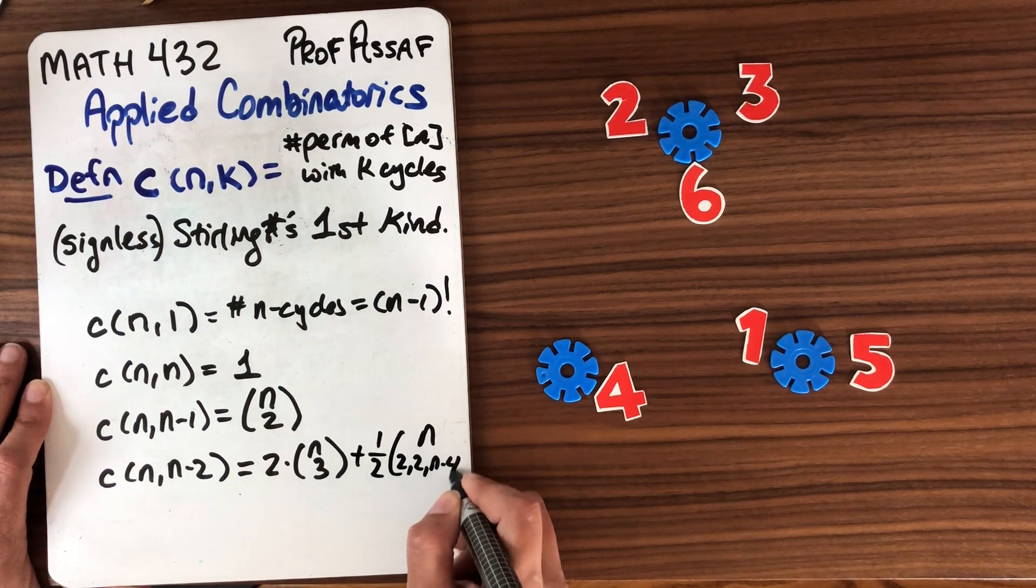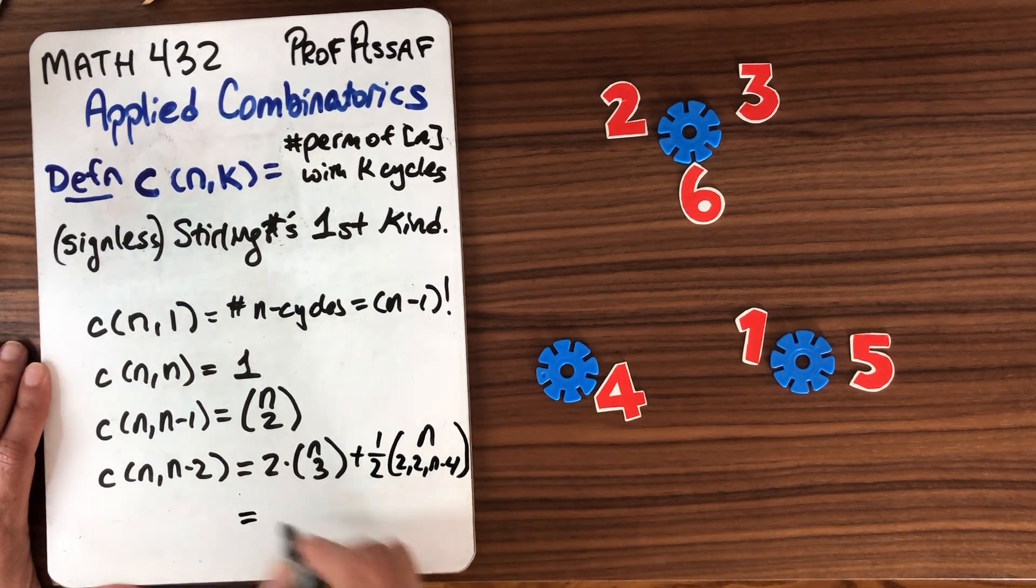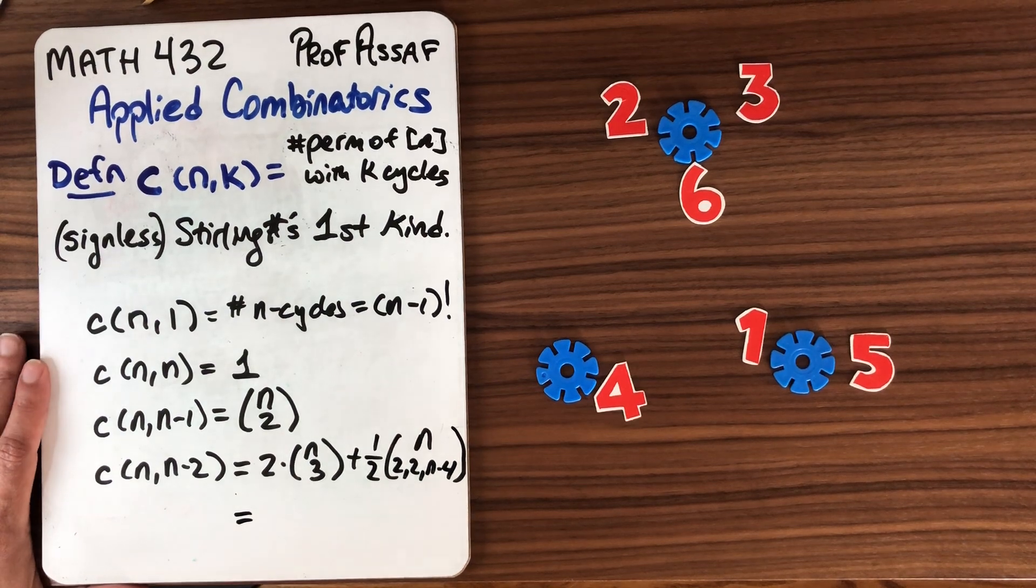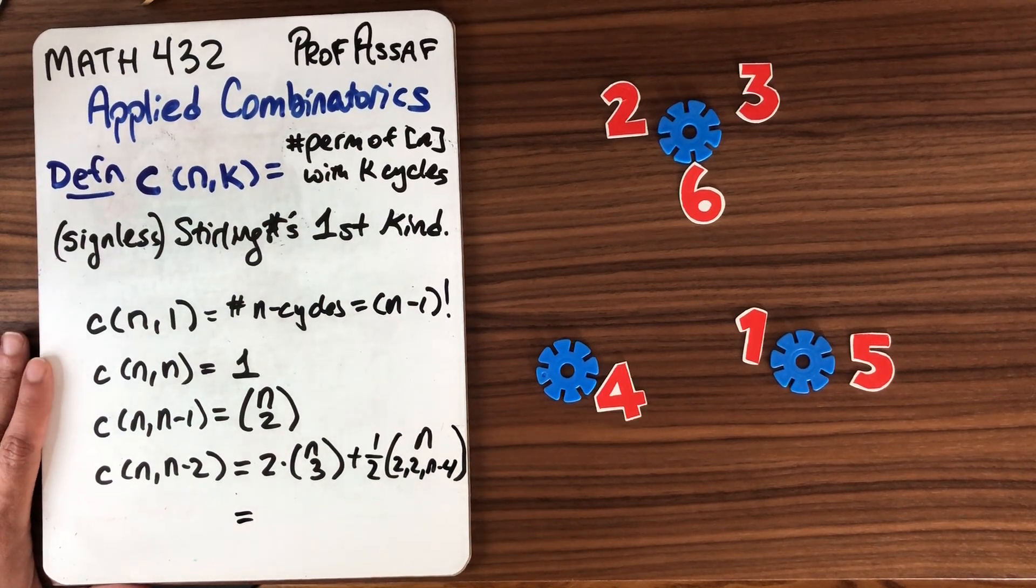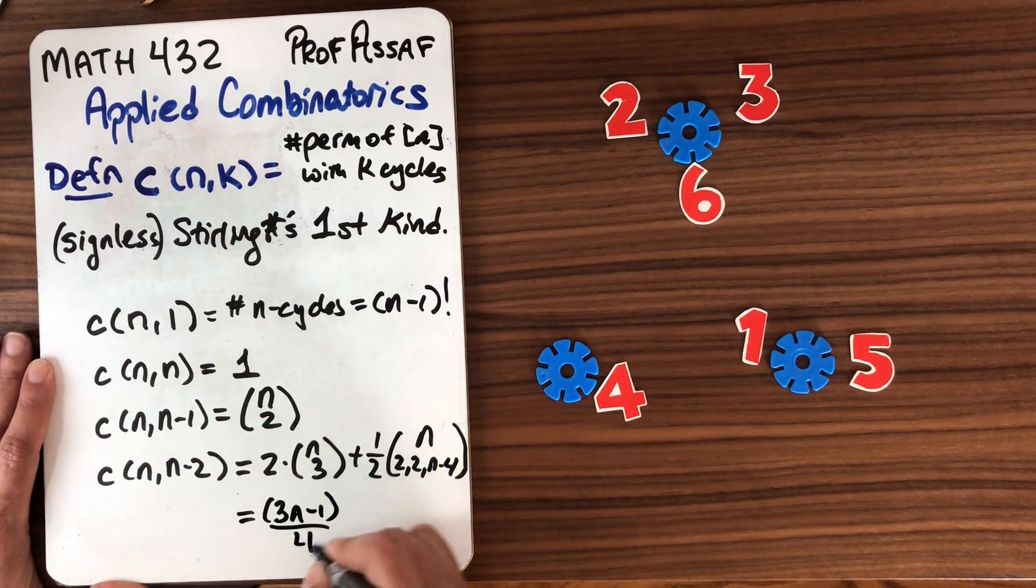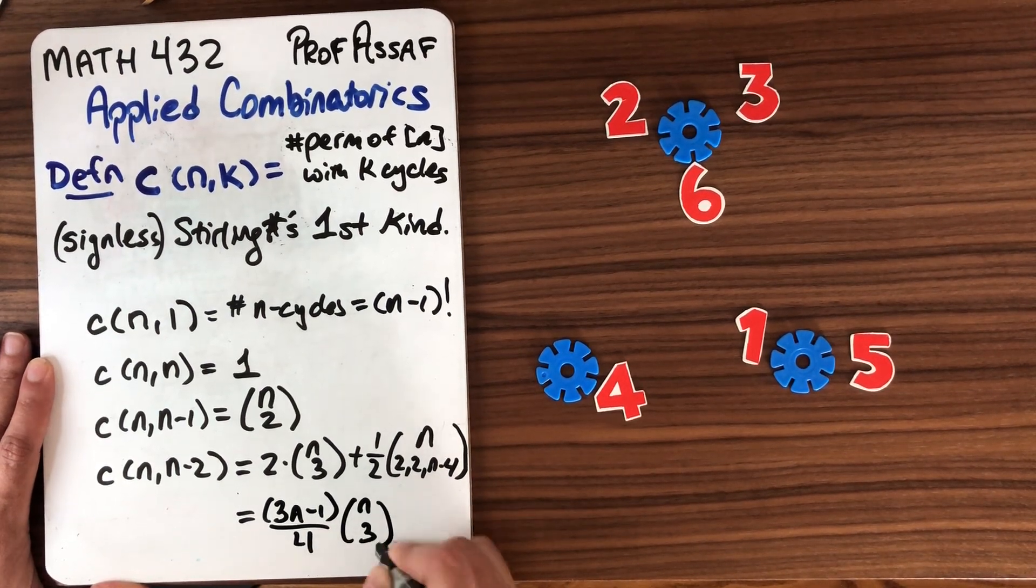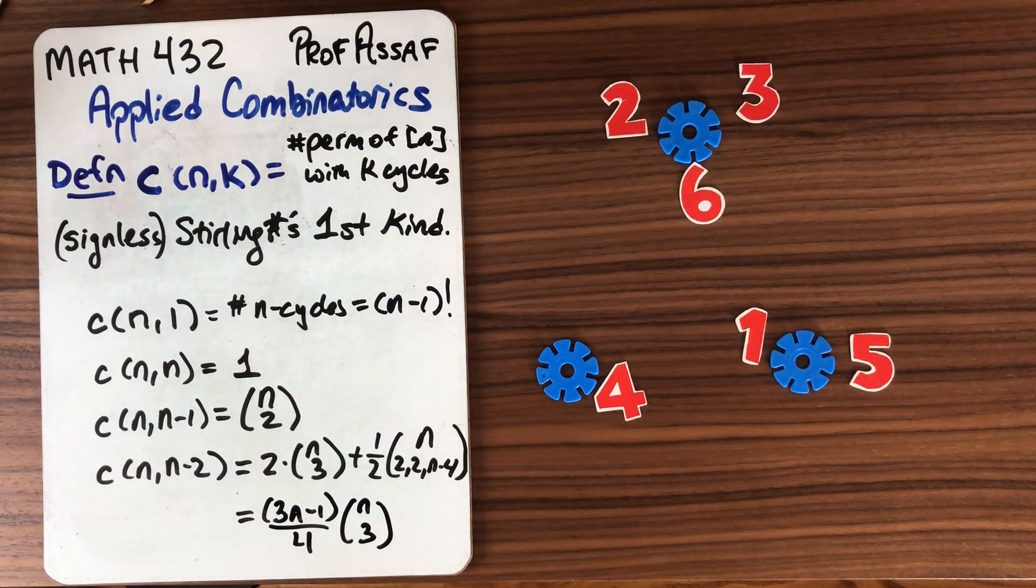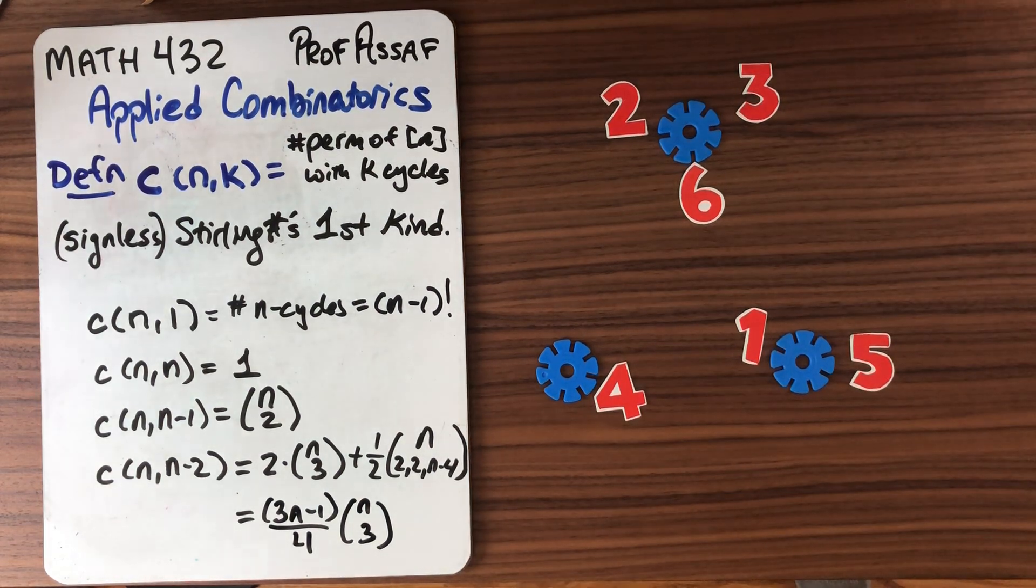Plus if you have two two-cycles that's going to be the same as what we had in the Stirling case. But you can see that this 2 here is a little different and you can do a little bit of algebra. The more common way that you see this written is 3(n-1) divided by 4 times n choose 3. You just get there with a little bit of algebra. So you can practice that if you want to practice your playing with coefficients.